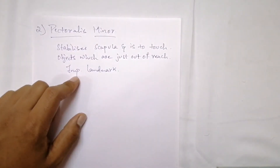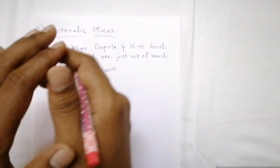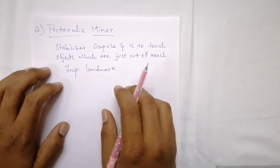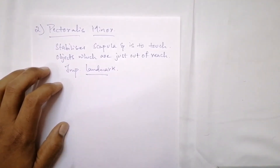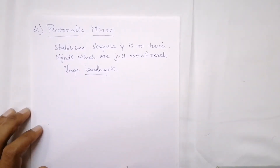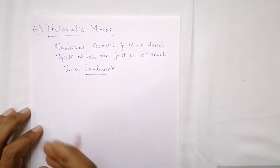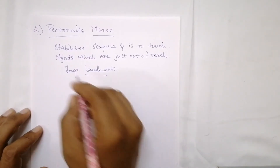It is important to keep the pectoralis minor intact during dissection so you can appreciate the axillary artery and the cords of the brachial plexus, which pass underneath it. In summary for pectoralis minor: the origin is from the third to fifth ribs near their costal cartilages; the insertion is at the medial border and superior surface of the coracoid process of the scapula; the nerve supply is the medial pectoral nerve.